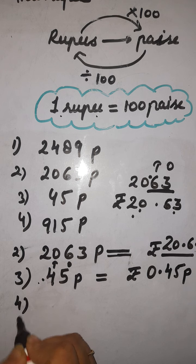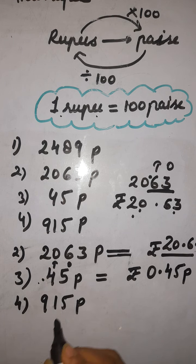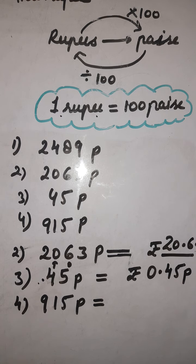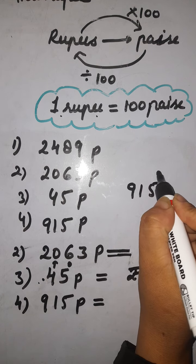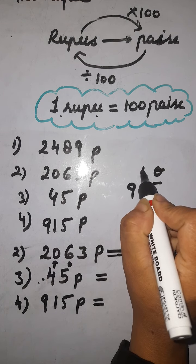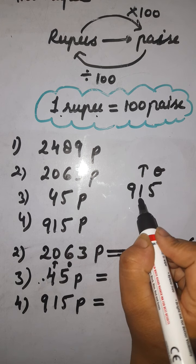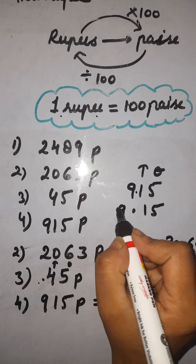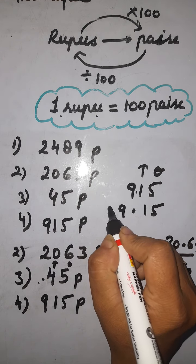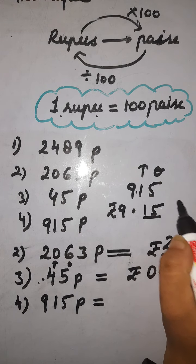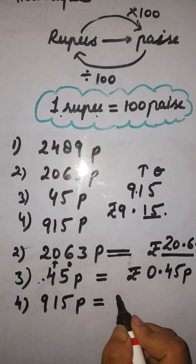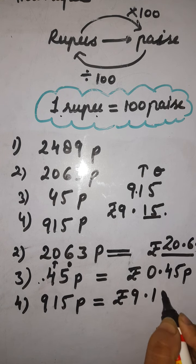Another example is 915 paise. When we convert this into rupees and paise, we look at the ones and tens place. In 915, 5 is in ones place and 1 is in tens place. We put a dot here to separate them. The remaining digit — 9 — converts into rupees, and the ones and tens digits become paise. Our answer is rupees 9 and 15 paise.